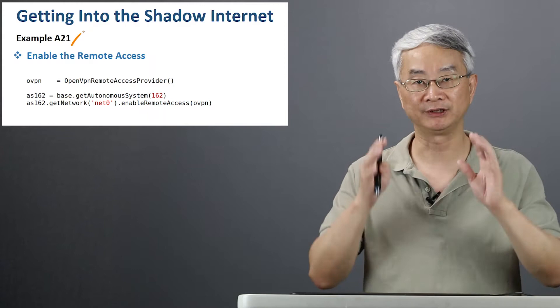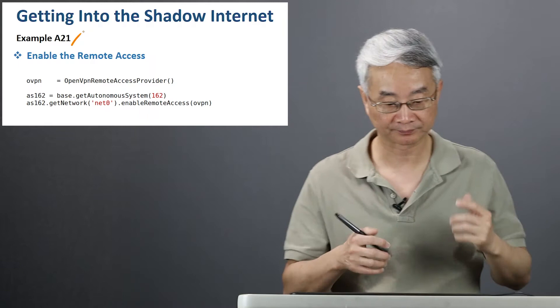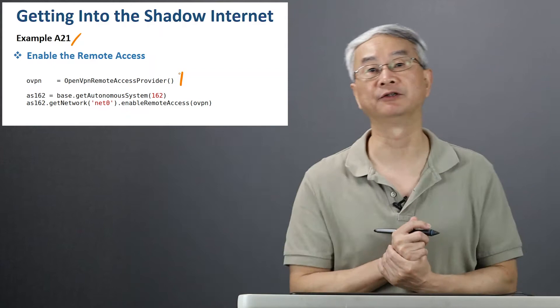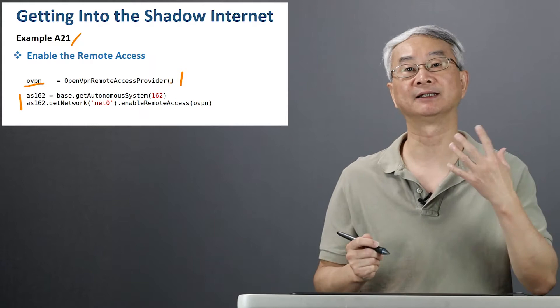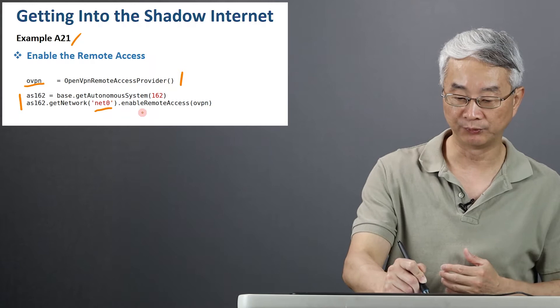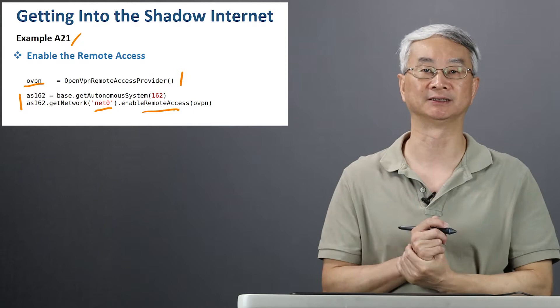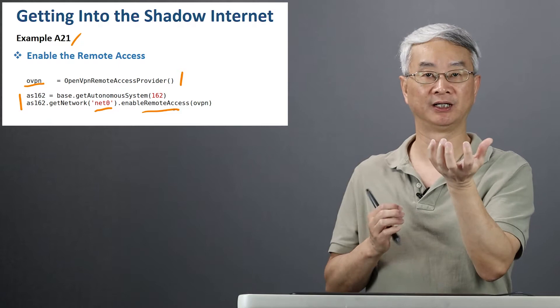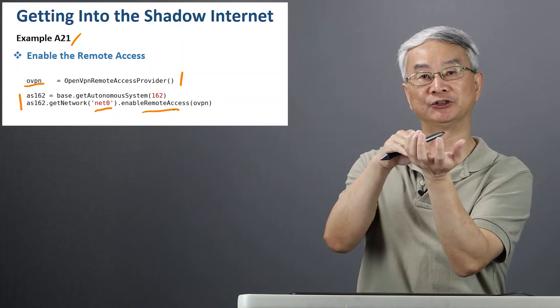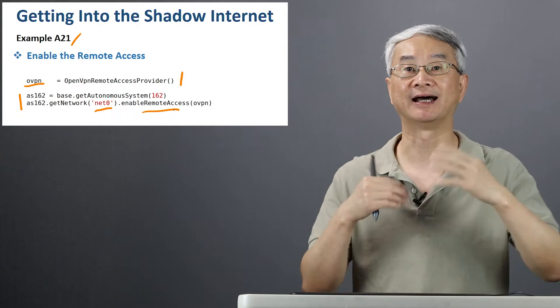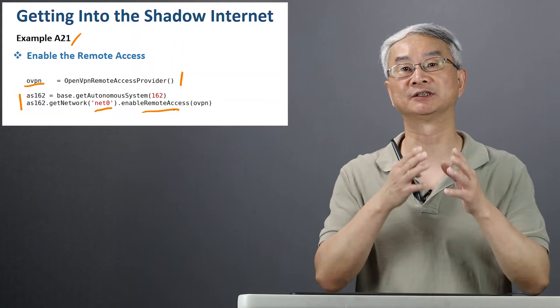There are two parts. For this one, I am going to first focus on how we get the traffic into the emulator. We have created this OpenVPN access provider, which basically installs the VPN server on the node that you select. So here I am creating this layer, and then I select autonomous system 162, and I am going to enable the remote access on the network inside that autonomous system. That is going to create a bridge — a VPN bridge — so the outside world can attach themselves to this bridge. Essentially they are physically connected to this network. We are using VPN; enabling that is very simple, just a simple invocation of this API. Now this network is open to the outside.